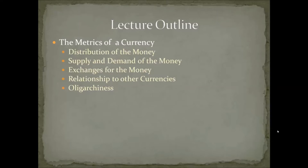In terms of a high oligarchalness currency, that would be the case where a small group of people can have a dramatic impact upon the money. In the United States, this applies because we have the Federal Reserve System, which can affect the supply of the money and shoot for certain price points. A currency backed in gold with no central bank would be a low oligarchalness currency, because no single entity could significantly influence the supply, demand, or value of the money — that would be determined by simple economics.